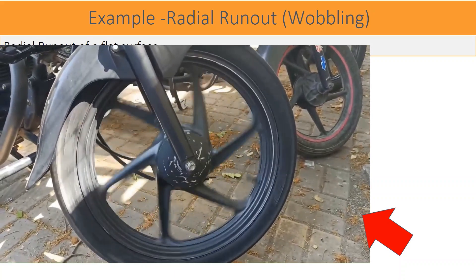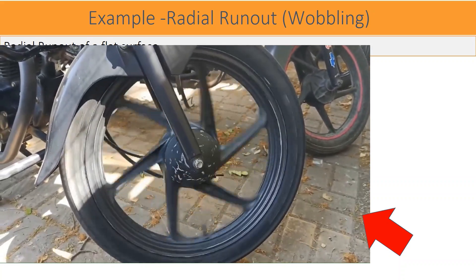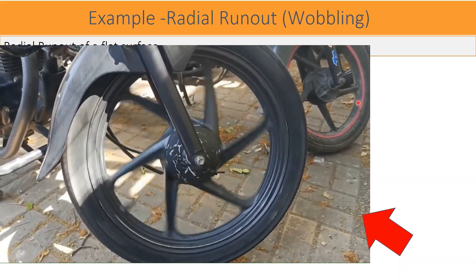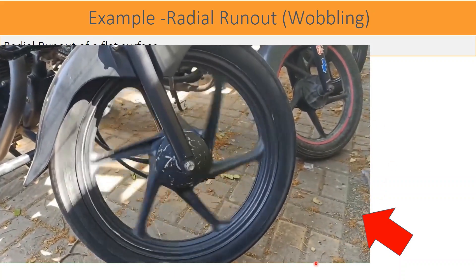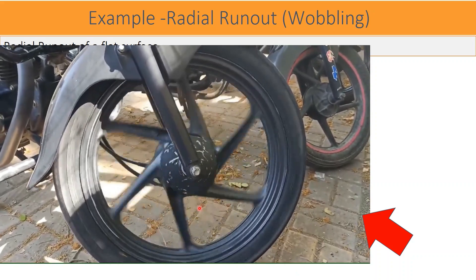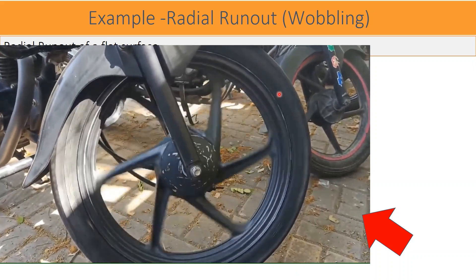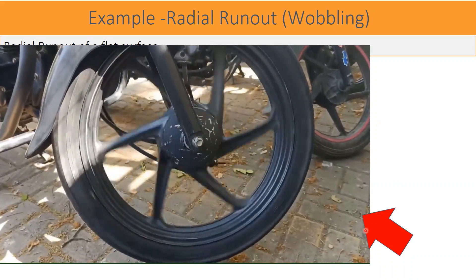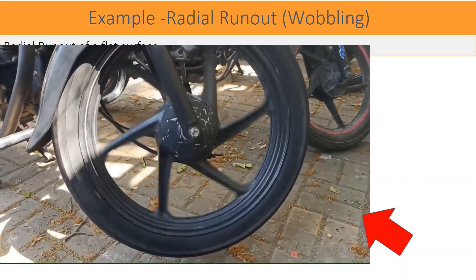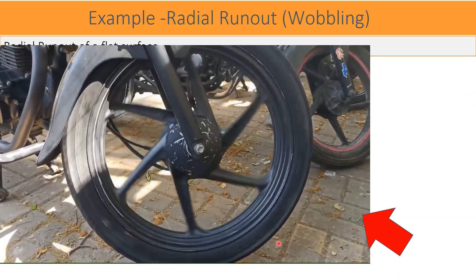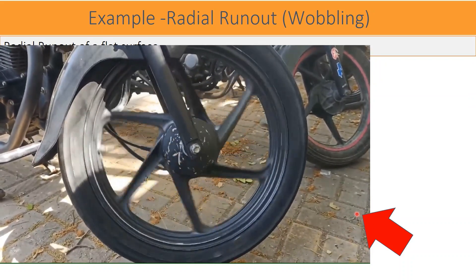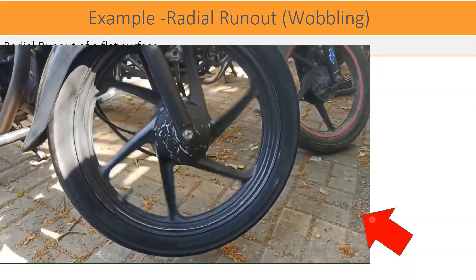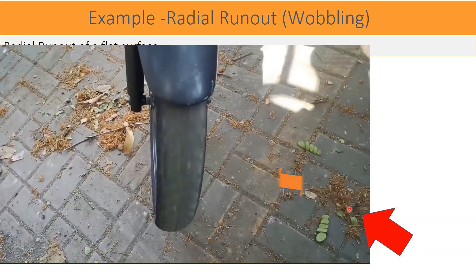Rotating a wheel rim is the most common example of oval rotation as shown in the video. Generally everyone can understand very easily the effect of oval rotation of a wheel while driving.